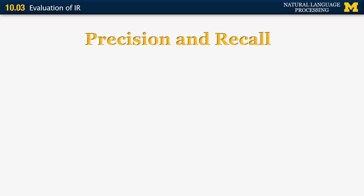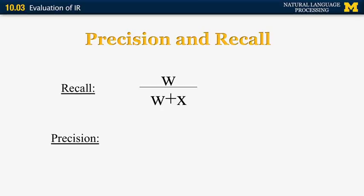Just like in text summarization, we can define precision and recall. Recall is W divided by W plus X, and precision is W divided by W plus Y. Recall will be high if the system returns as relevant most of the actual relevant documents. Precision will be high if almost all of the documents returned by the system are indeed relevant.